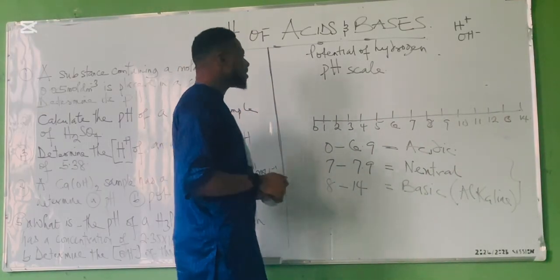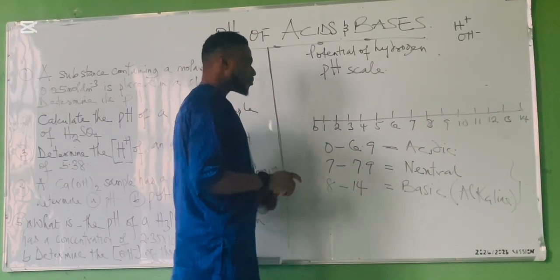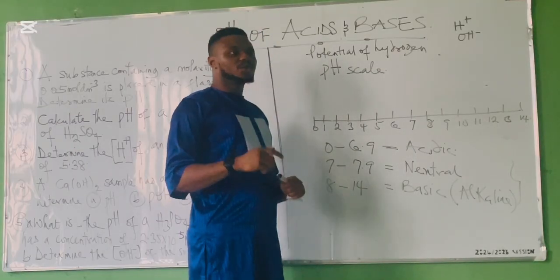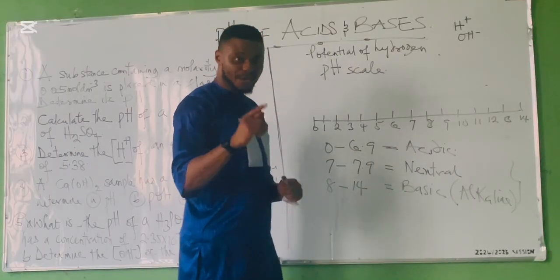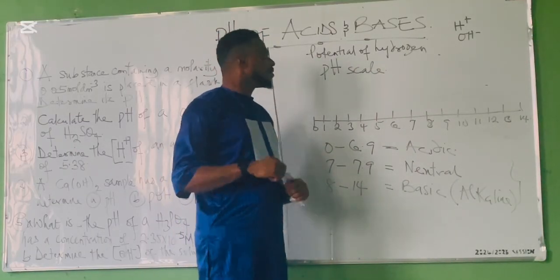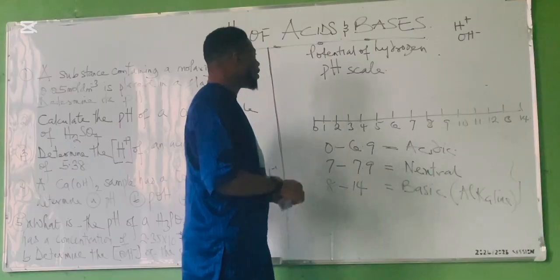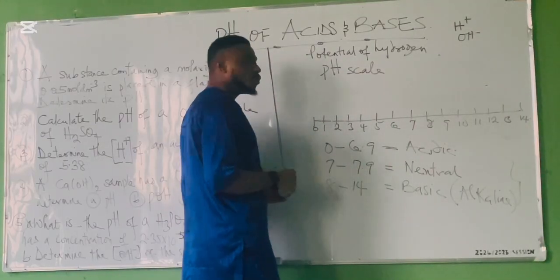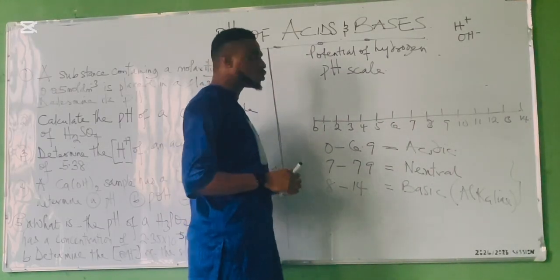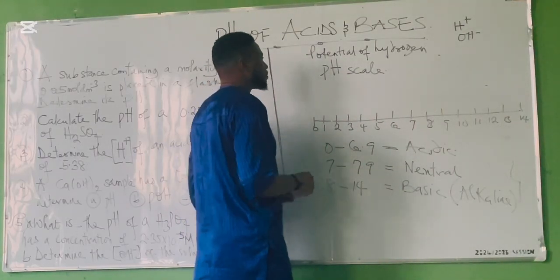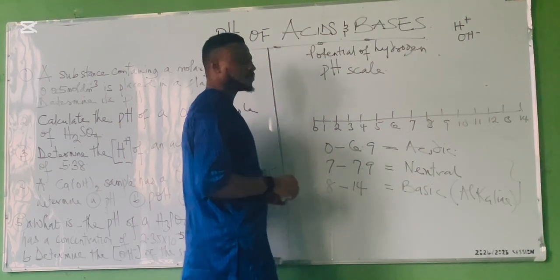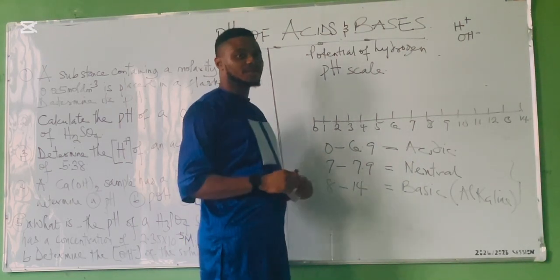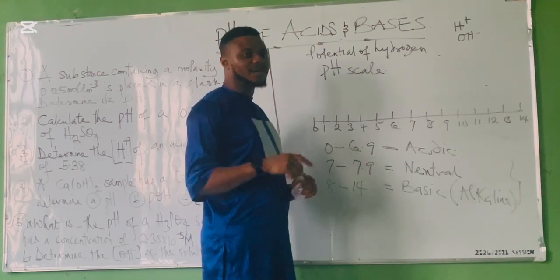A neutral substance is one that is neither an acid nor a base. To determine the pH of a substance, the molar concentration is a huge determinant. So for you to actually know the pH of a substance, you need to first know the concentration.